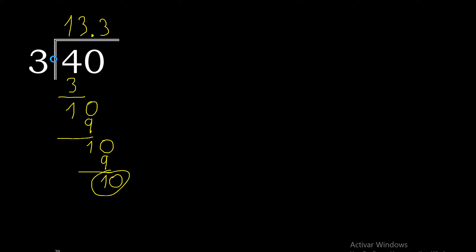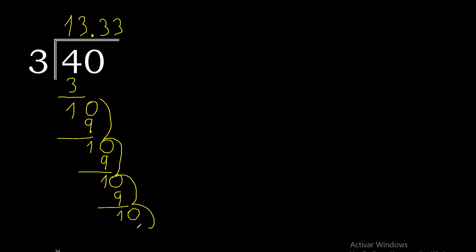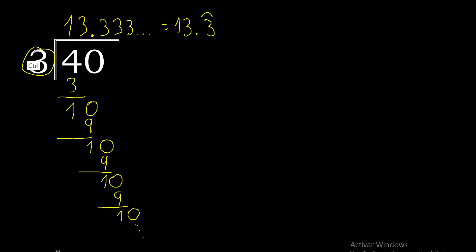Bring down 10. 3 multiplied by 3 is 9. 10 minus 9 is 1. Complete — this repeats. Therefore this number repeats: 13.3 repeating. Therefore 40 divided by 3 equals 13.3 repeating.